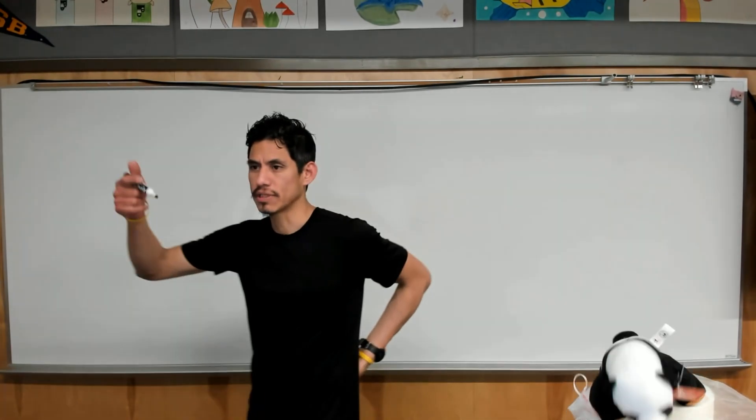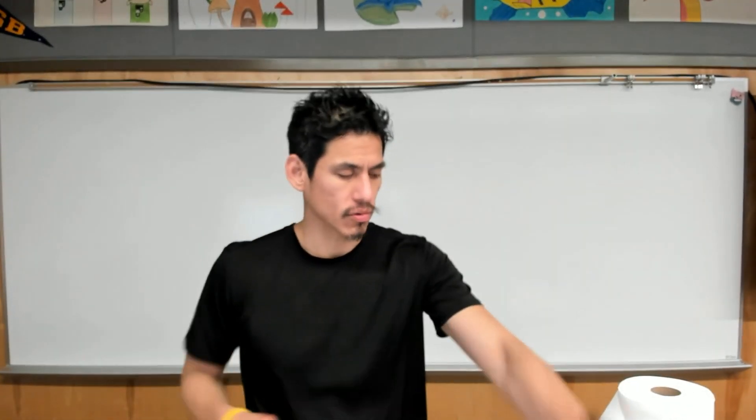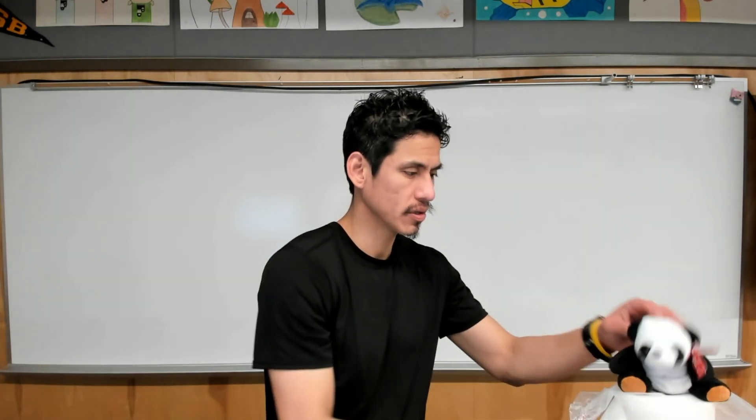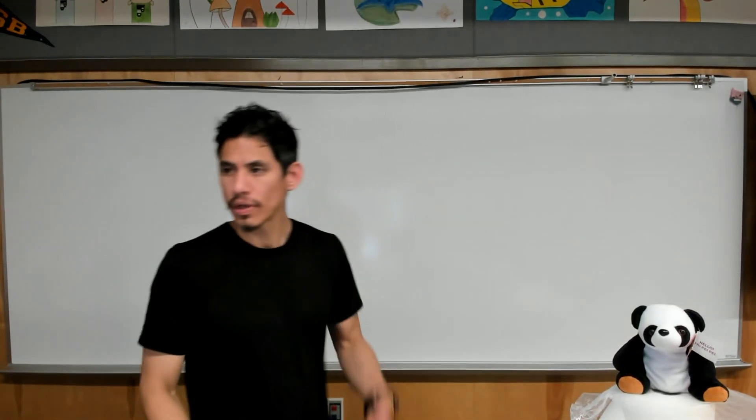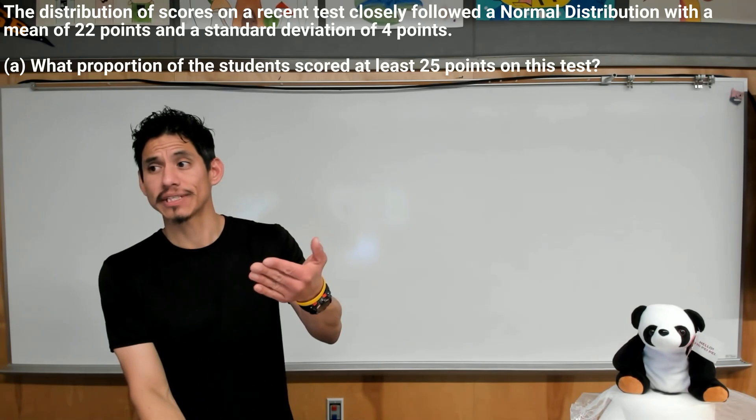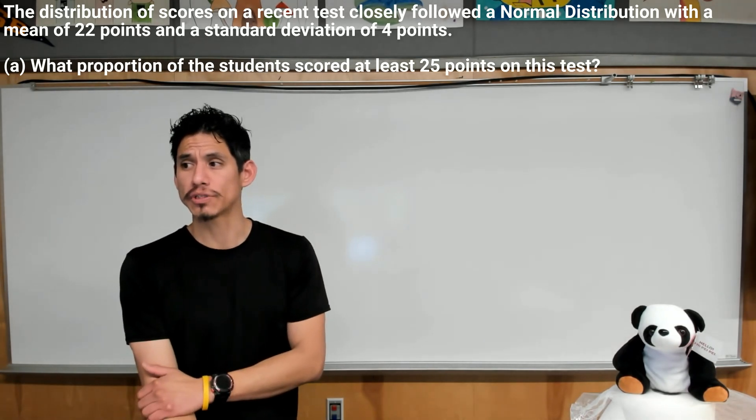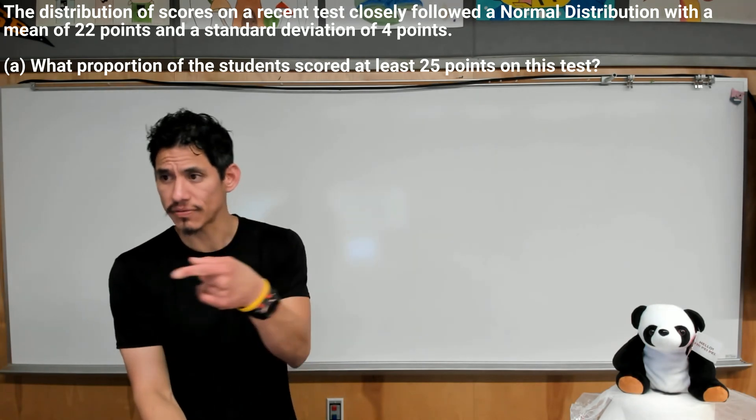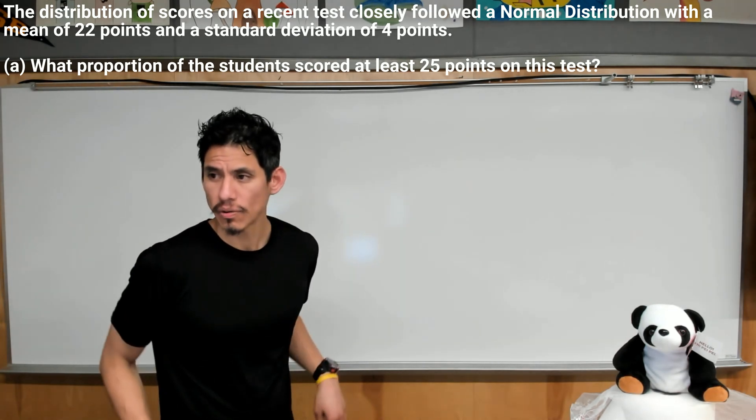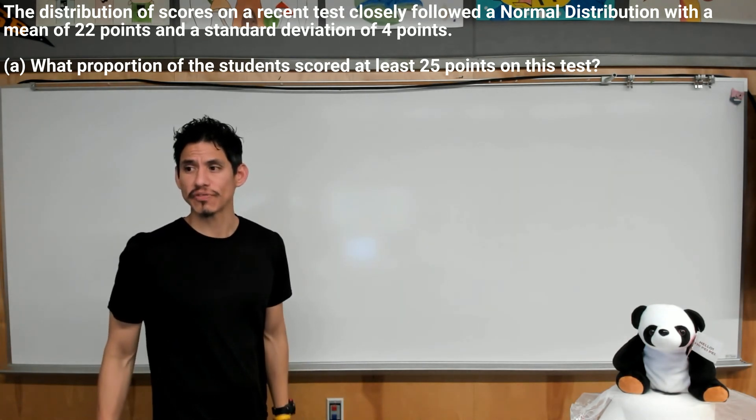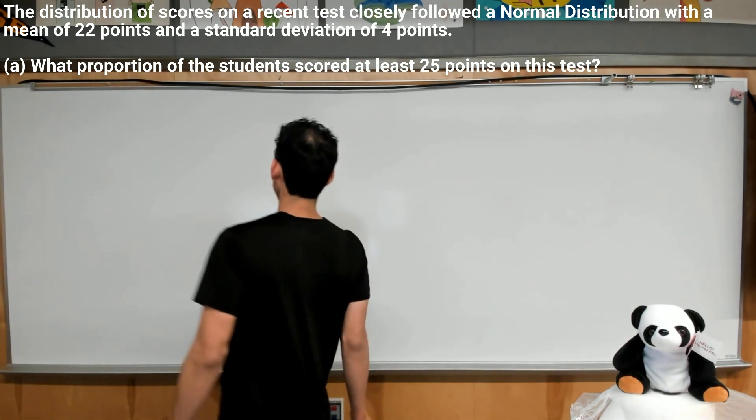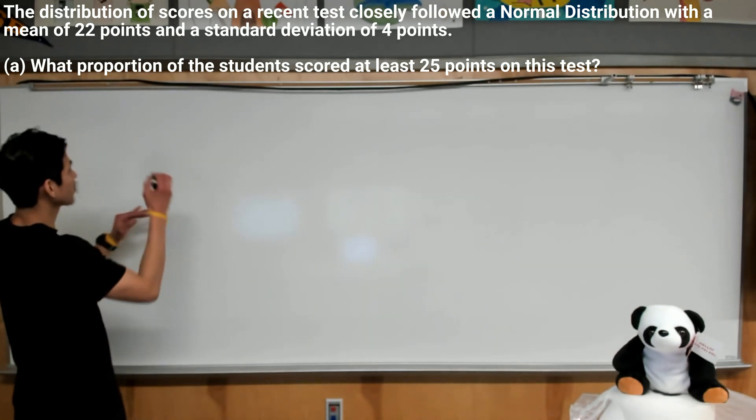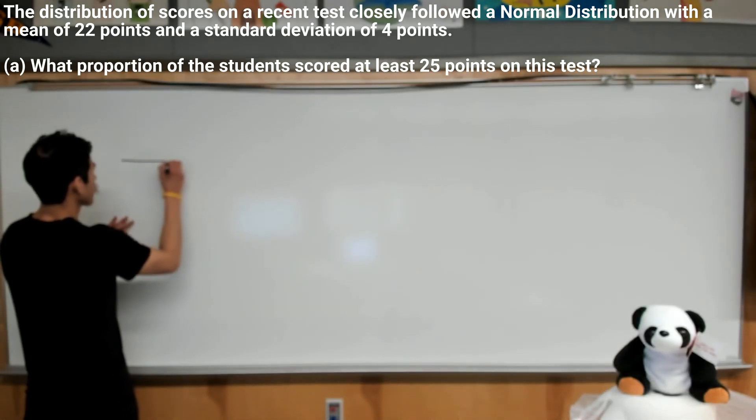Alright, so here we have a problem. Hold on, emergency, sorry man. It says a distribution of scores on a recent test closely followed a normal distribution with a mean of 22 points and a standard deviation of 4 points. So let's start off by drawing a sketch of a normal curve.